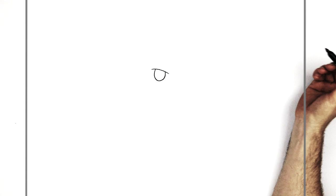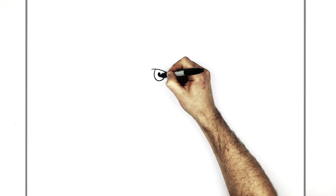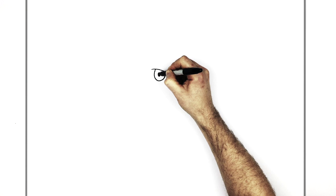And then the pupil just inside — again, slightly oval-ish, not a perfect circle, because our lioness is looking off to the left-hand side. So we'll make it look just a bit thinner than it would be normally.